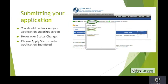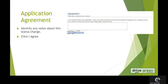We are done filling out the forms, so now we want to submit our application. You will see that there is an option for Status Changes in this menu bar in the white space. Please hover over it and you will see two options: Application Submitted or Cancel Application. We want to submit the application so we will choose Apply Status. This will bring you to the application agreement page. You can identify any notes about the status change here, or you can enter any information that you want us to know — any unique attributes of your program — in this box.